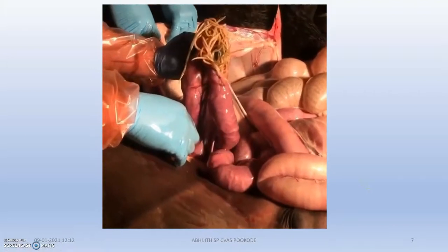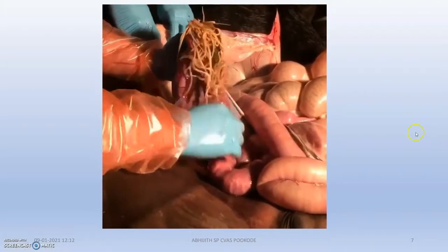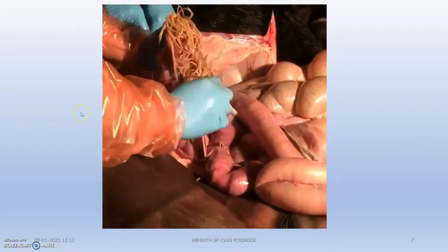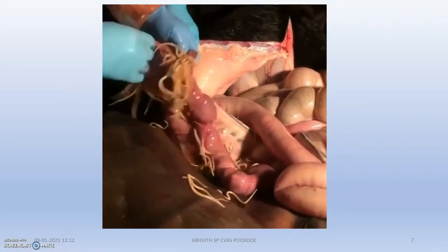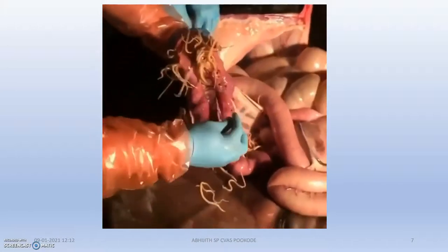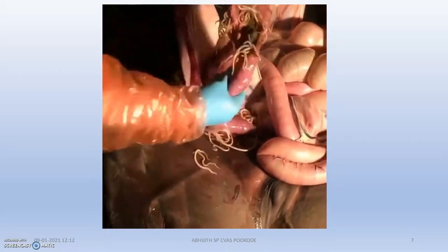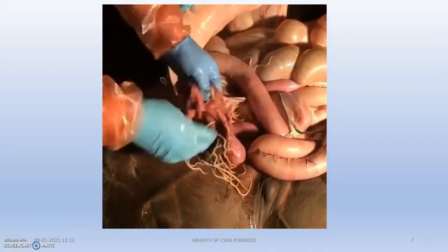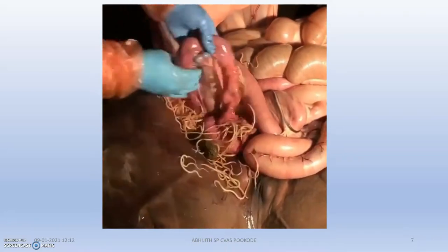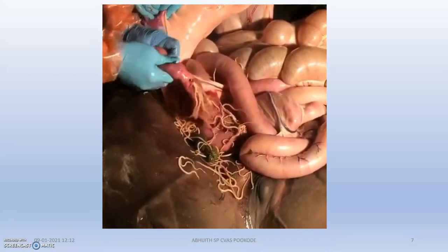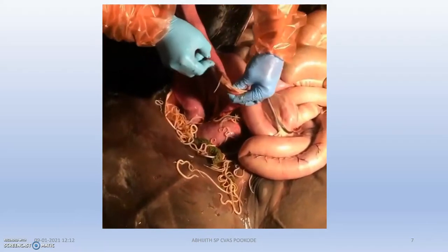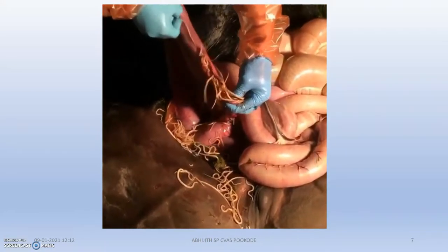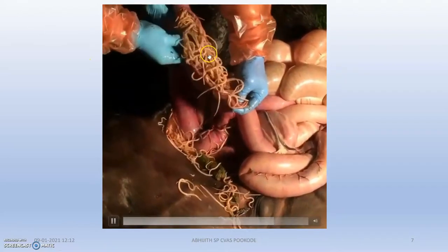This video shows a post-mortem of the intestine. You can see the intestine is completely loaded with Parascaris equorum worms — thousands and thousands of adult worms. This leads to colic; the worms obstruct the intestine, the intestinal flora diminishes, impaction occurs, and there is complete pressure on the intestine. Ultimately the animal dies. Due to pulmonary problems, obstruction, and digestive problems, the horse becomes anemic and emaciated and soon dies.